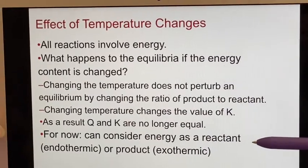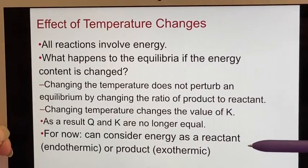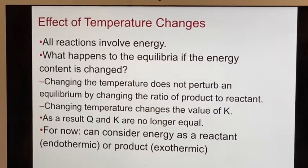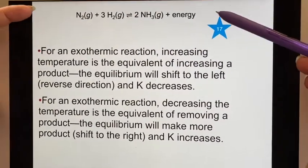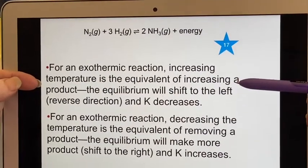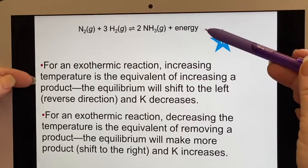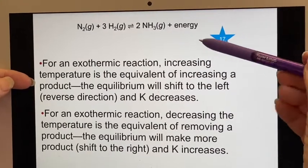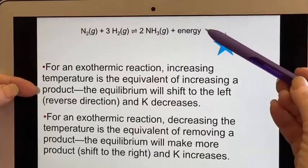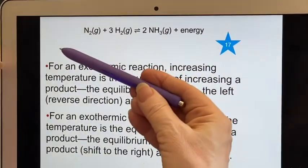We're just going to think of energy as being another reactant or another product, depending on whether it's an endothermic or exothermic reaction. Now this is an exothermic reaction. If I increase the temperature in an exothermic reaction, that's the same thing as if I had decided to increase the amount of a product, and it will tend to push equilibrium back to the left.